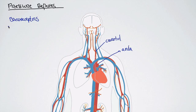For example, a barometer measures pressure. And here we have baroreceptors. And these baroreceptors respond to changes in, you guessed it, pressure. And that's why they're called baroreceptors.